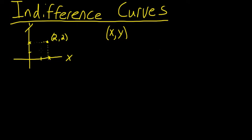On this graph there are lots of other points that represent different bundles of goods. And so when we graph utility, we want some way of telling the difference between the bundle that I have, or the bundle I'm looking at, and other bundles, and deciding which one is better.